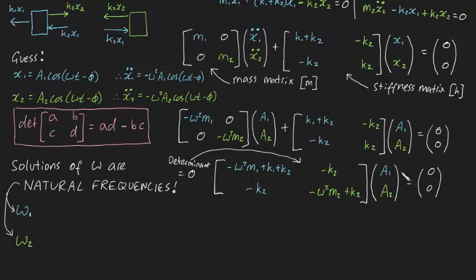But first, let's consider the first row of this expression. Minus ω² m1 plus k1 plus k2 times a1 minus k2a2 equals zero. From this expression, we can solve for a1 divided by a2, the ratio of amplitudes, to be equal to k2 divided by minus ω² m1 plus k1 plus k2.